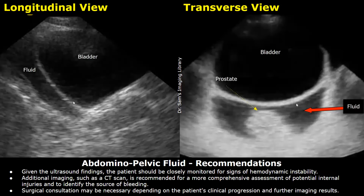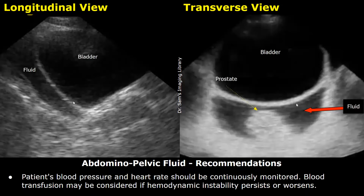Recommendations: Given the ultrasound findings, the patient should be closely monitored for signs of hemodynamic instability. Additional imaging such as a CT scan is recommended for a more comprehensive assessment of potential internal injuries and to identify the source of bleeding. Surgical consultation may be necessary depending on the patient's clinical progression and further imaging results. Patient's blood pressure and heart rate should be continuously monitored. Blood transfusion may be considered if hemodynamic instability persists or worsens.